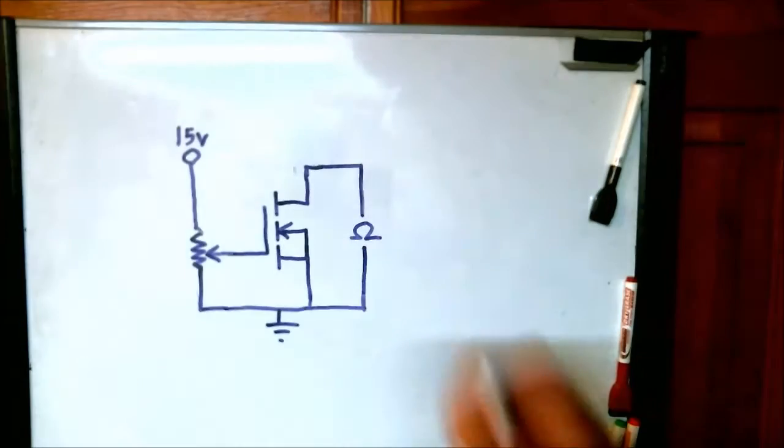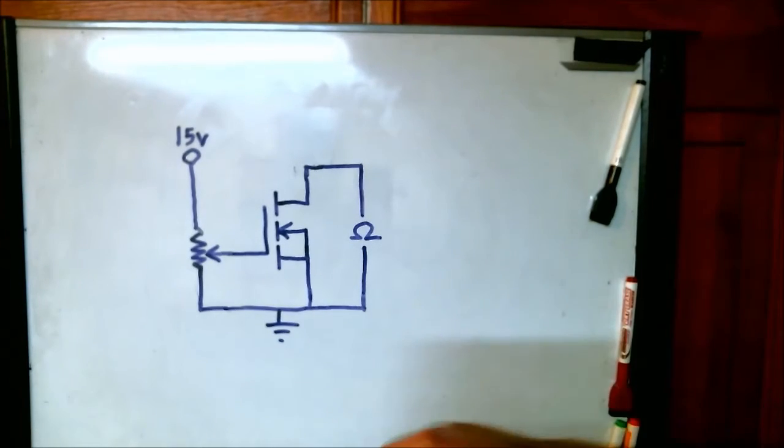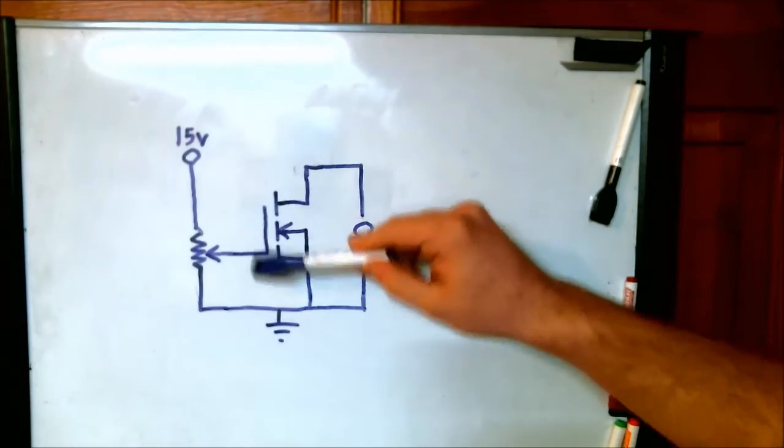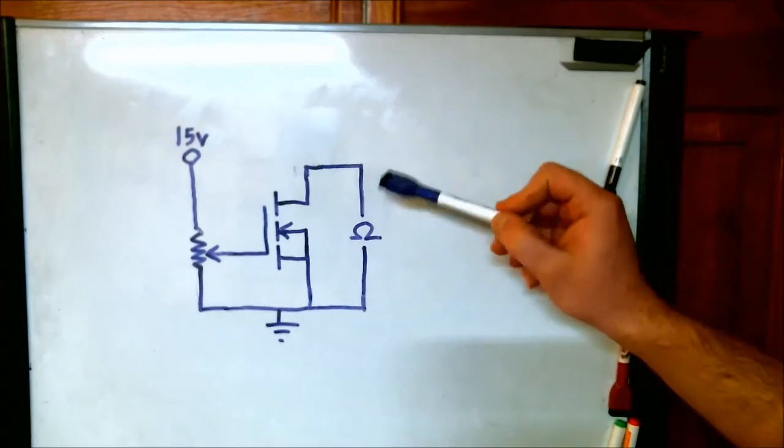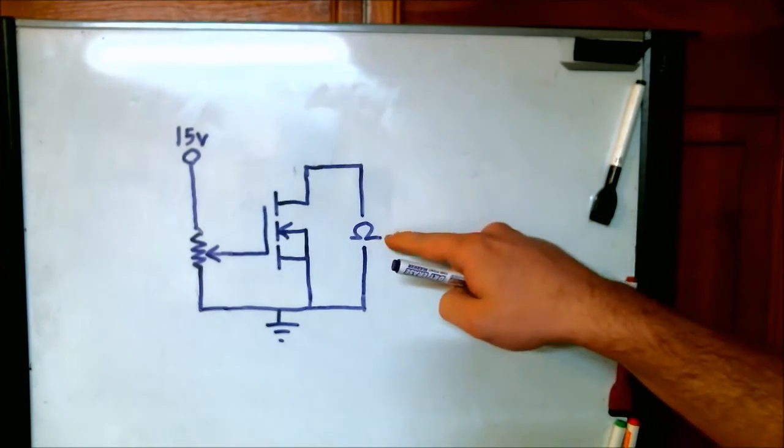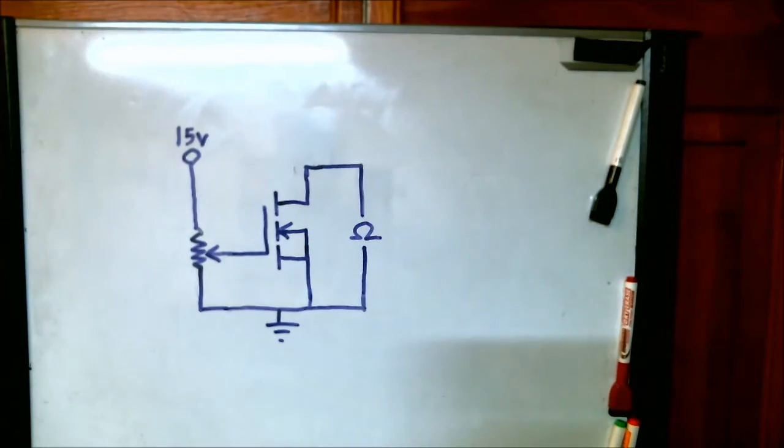Here's the inaccurate way of measuring RDS(ON). You need a 15 volt potential and a potentiometer so you can adjust the voltage at the gate. Then all you need to do is take an ohm meter and place it across the drain and the source to measure the resistance across that junction.